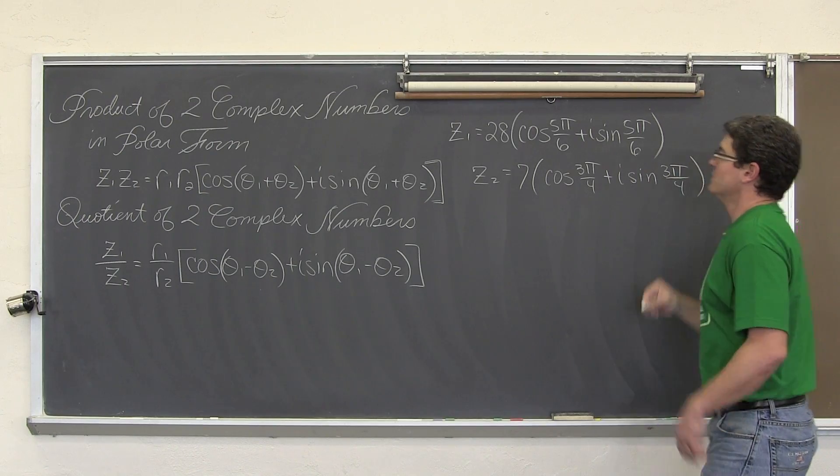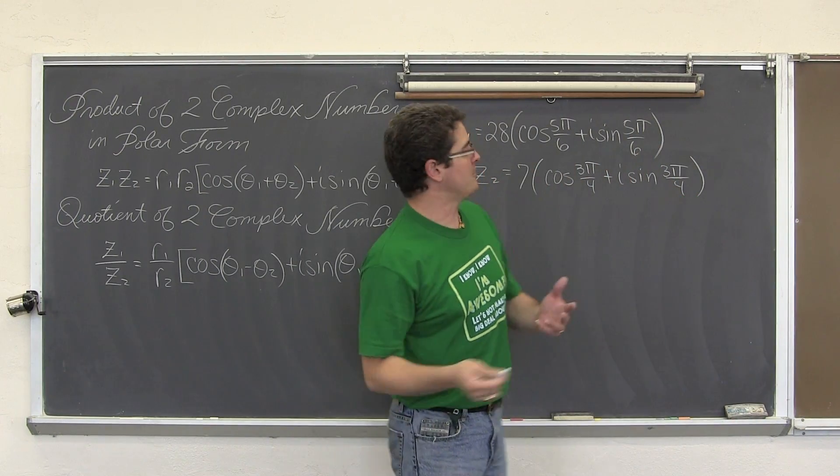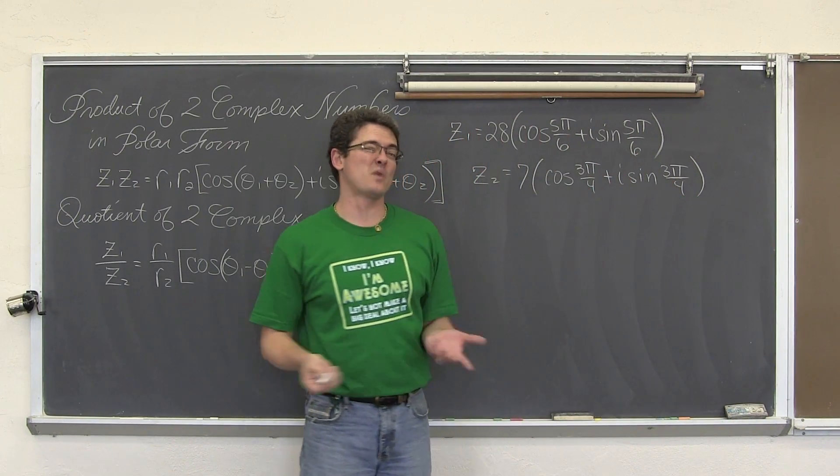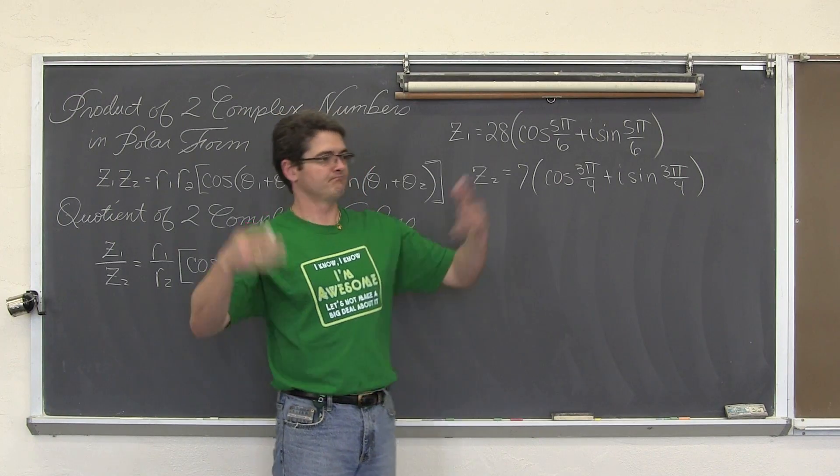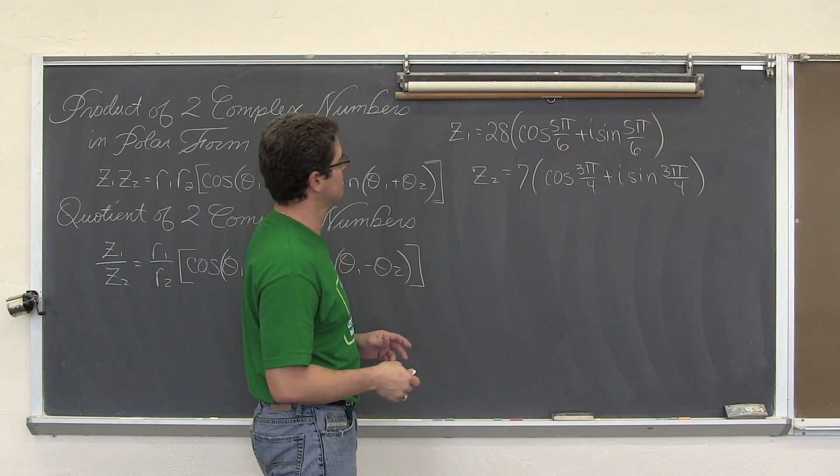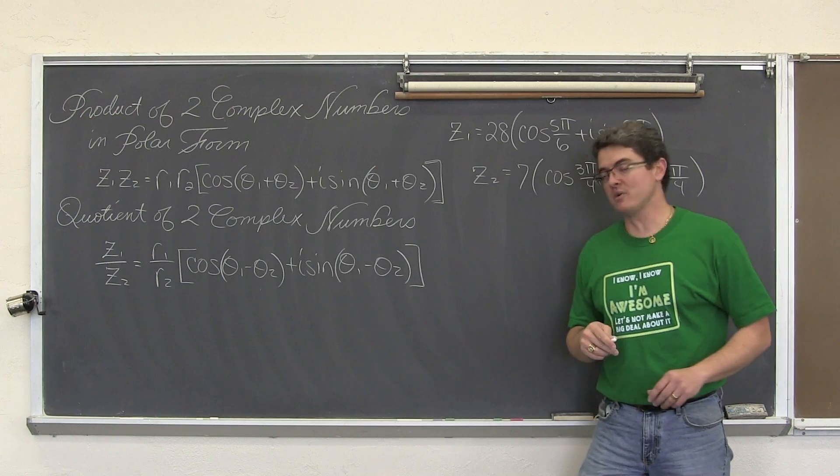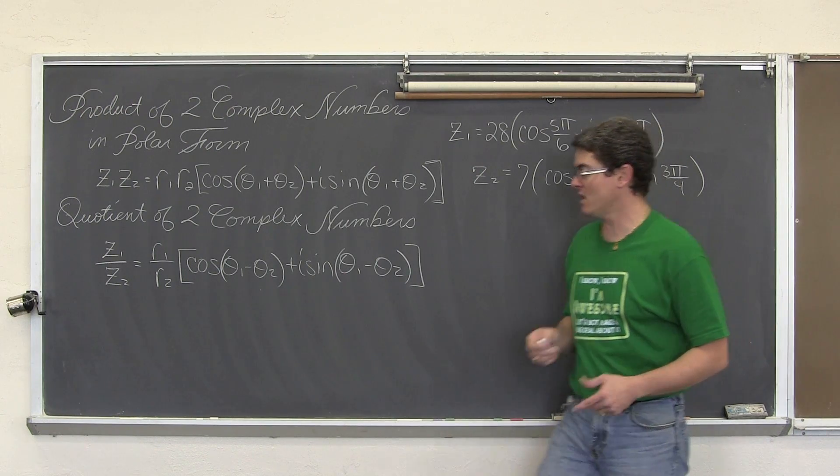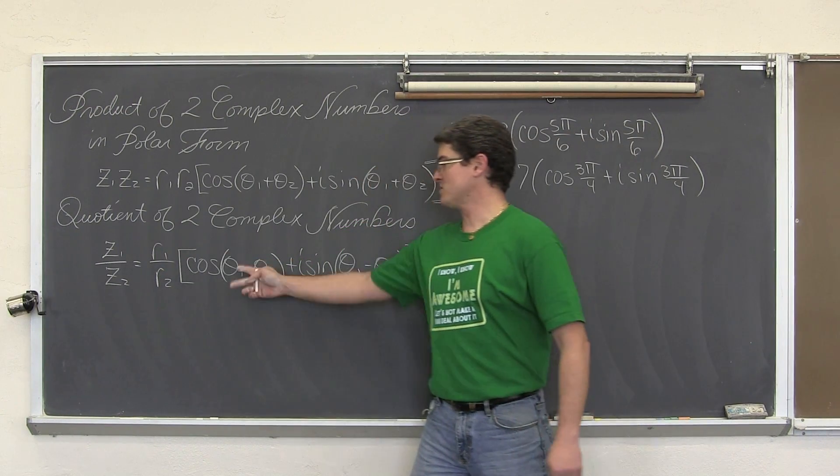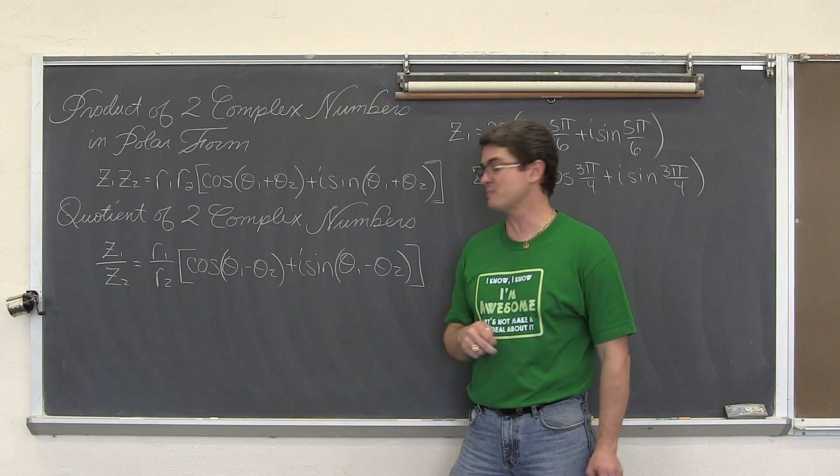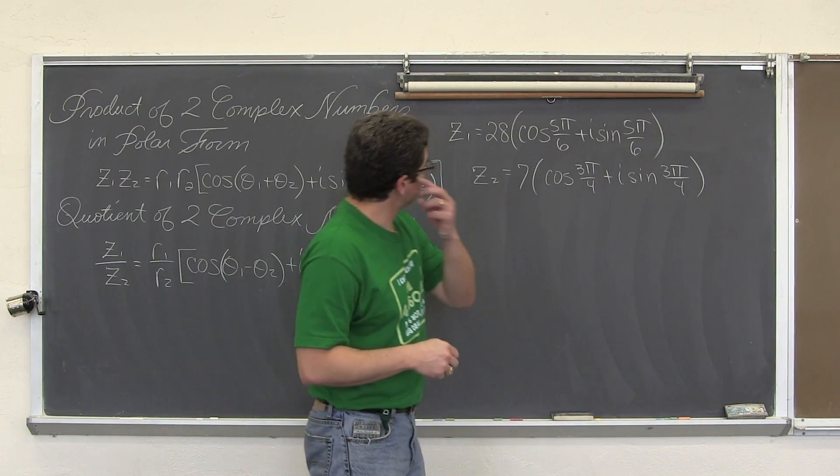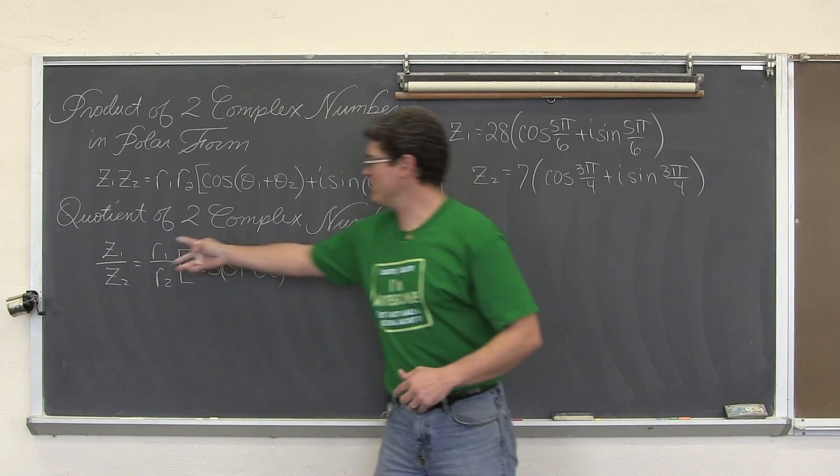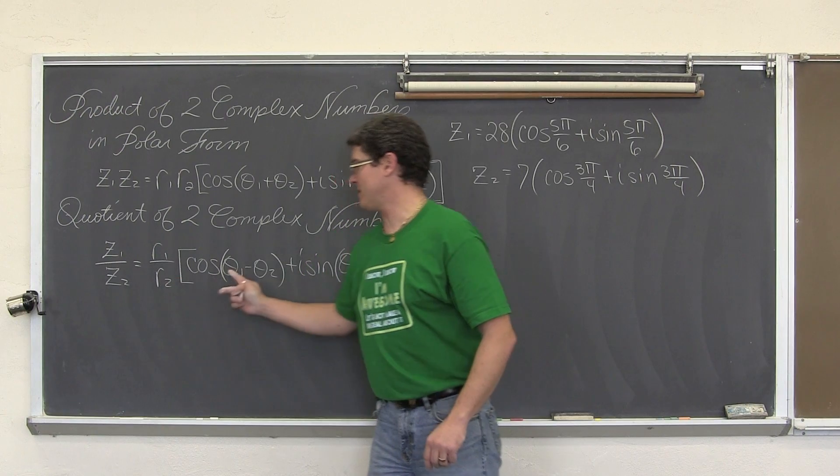Polar form of complex numbers can be in either degrees or radians. No big deal which one you're using. I want to find the quotient of these two complex numbers in polar form. We're going to divide the radiuses and subtract the angles. Make sure you keep this in proper order, because when you subtract, it's going to make a difference.